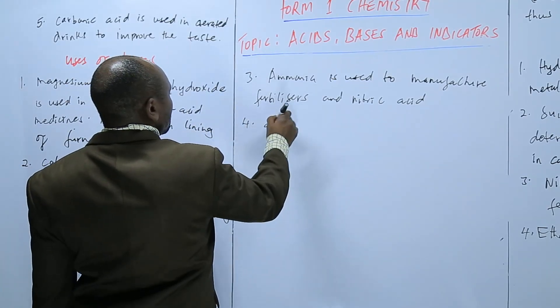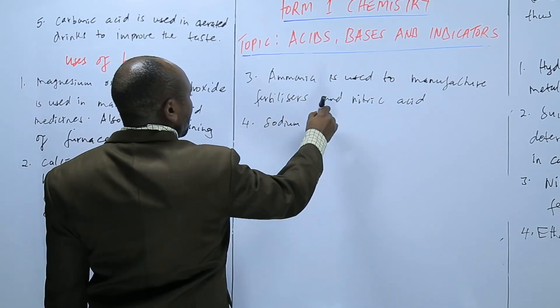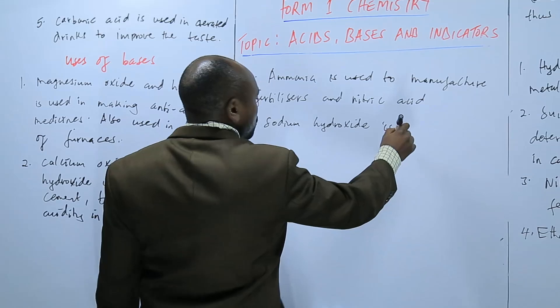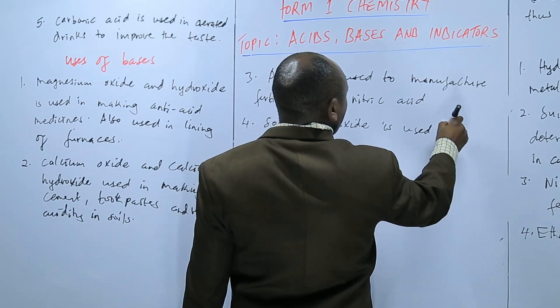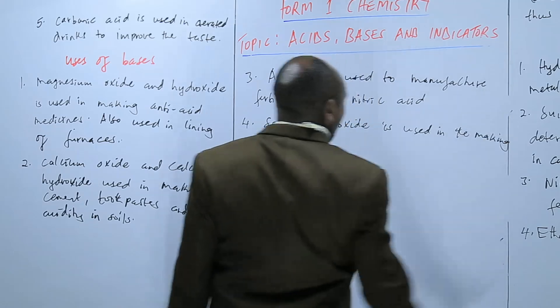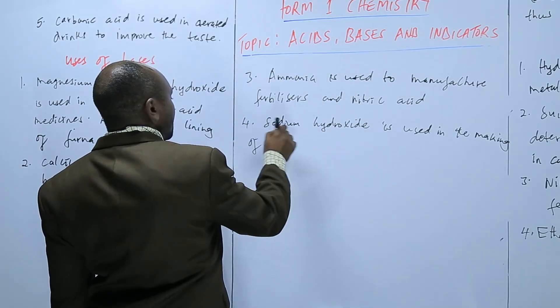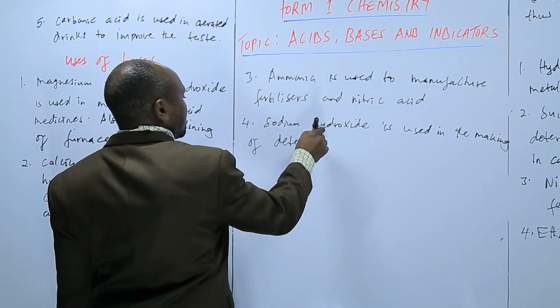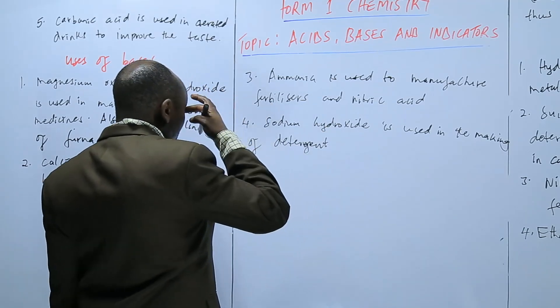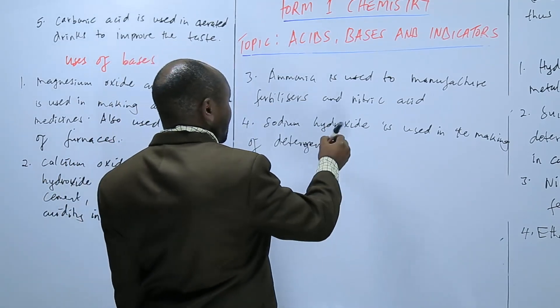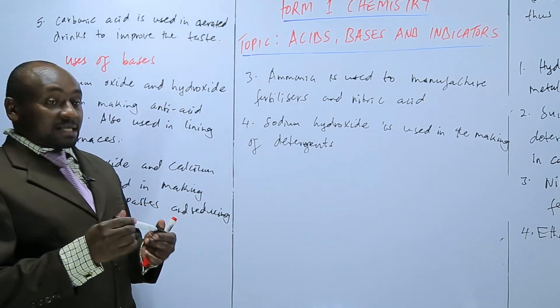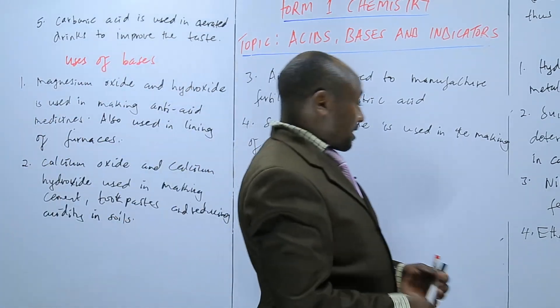We have sodium hydroxide is used in the making of detergents. So basically we have a lot of uses as far as acids and bases are concerned.